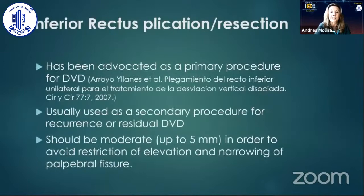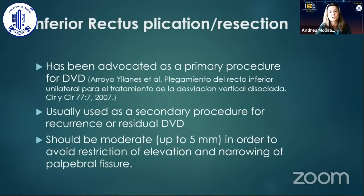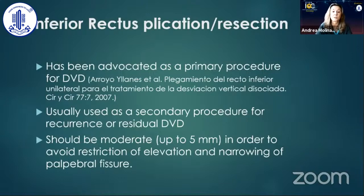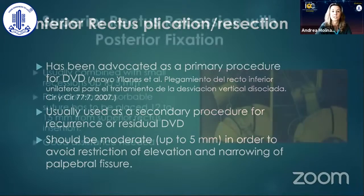Inferior rectus plication or resection has been advocated as a primary procedure for DVD by the Mexican School of Strabismology, but usually it is used as a secondary procedure for recurrence or residual DVD. It should be moderate — up to five millimeters — in order to avoid restriction of elevation and changing the palpebral fissure.